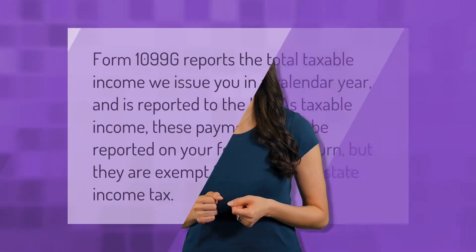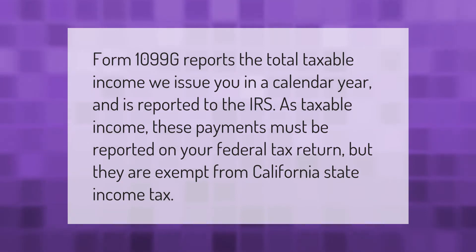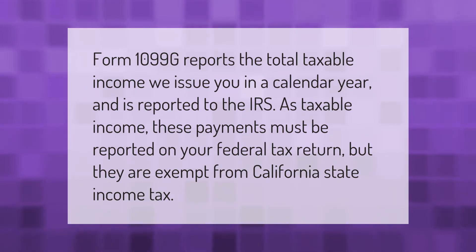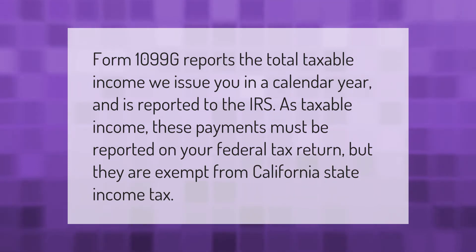Form 1099-G reports the total taxable income issued to you in a calendar year and is reported to the IRS as taxable income. These payments must be reported on your federal tax return, but they are exempt from California state income tax.